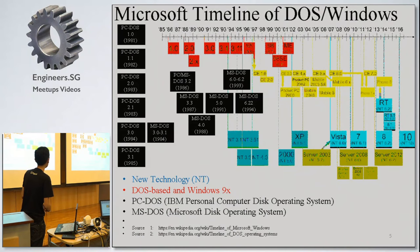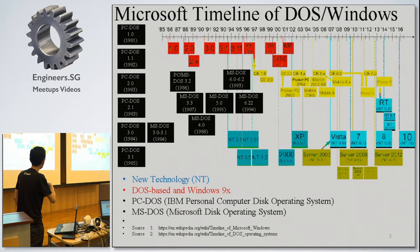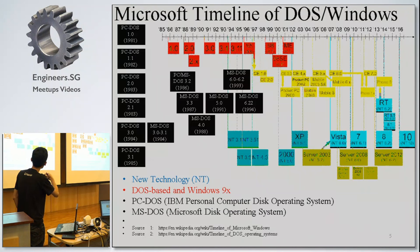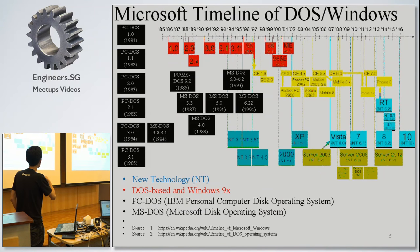A bit of history: modern systems like Windows 7, 8, and 10 are based on the NT line, which stands for New Technology. Before the NT line there was a DOS-based and Windows 9x line — Windows 95, 98, ME, and 98 SE. Before Windows there was DOS, and the early Windows operating systems had to run on DOS. DOS stands for Microsoft Disk Operating System.